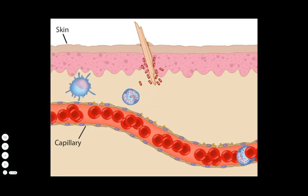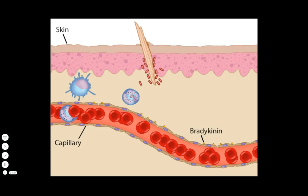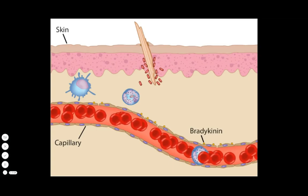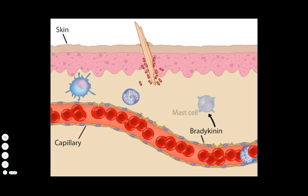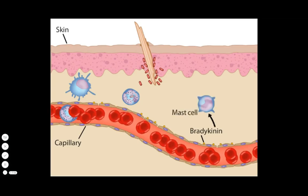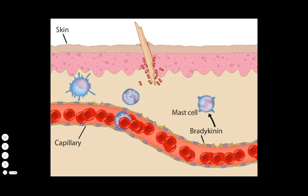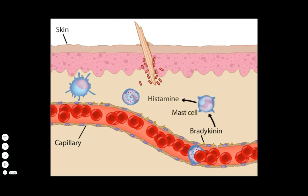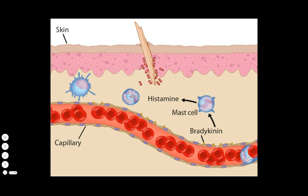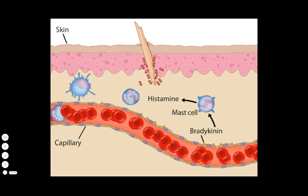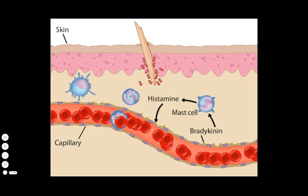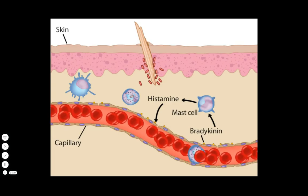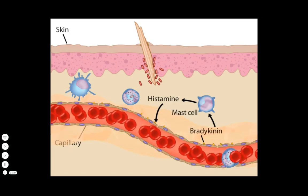Bradykinin molecules also bind to other cells of the immune system called mast cells that are in the area, causing them to release histamine. The histamine further loosens the endothelial cell junctions, allowing more fluid and cells to move out of the capillaries.